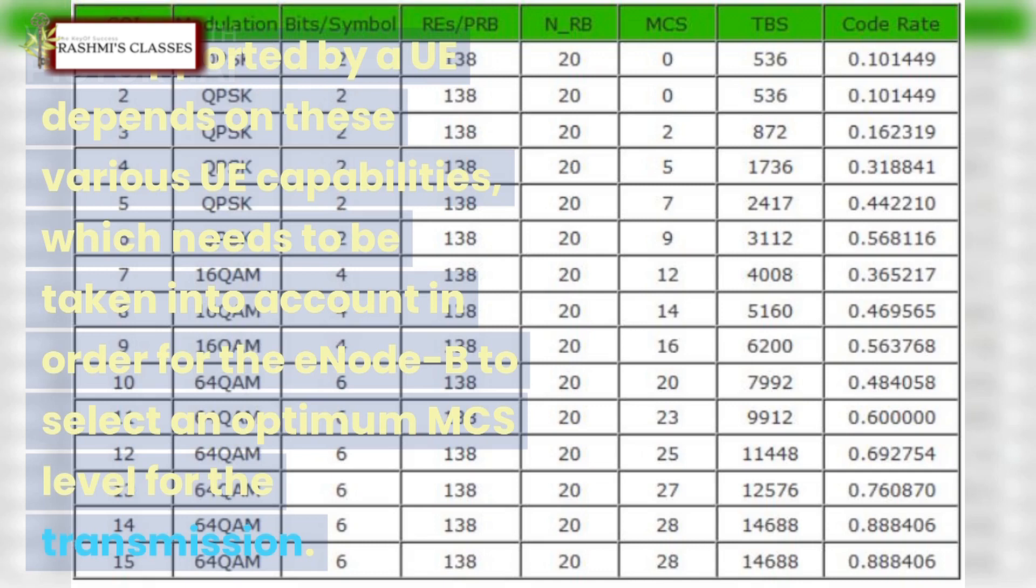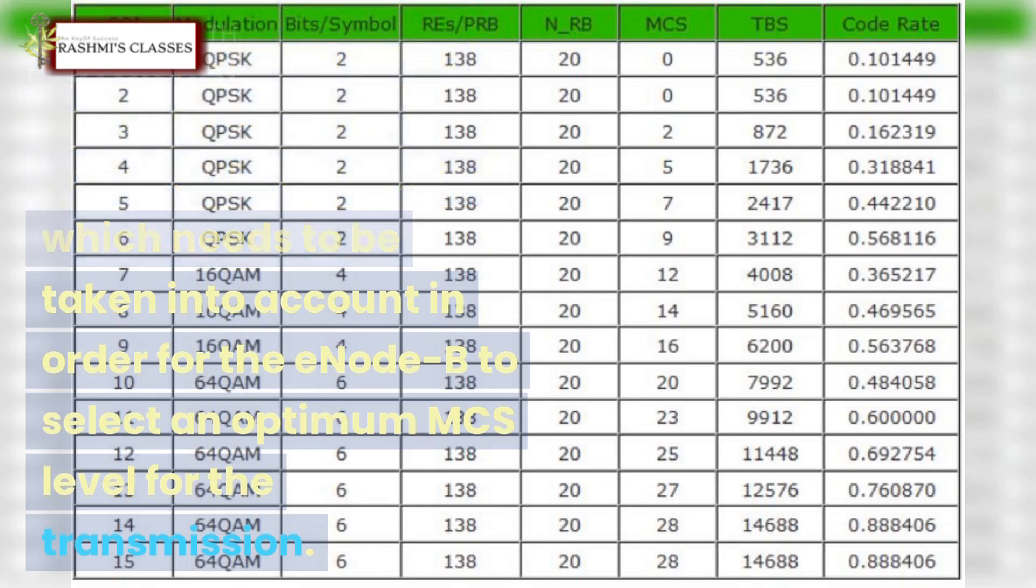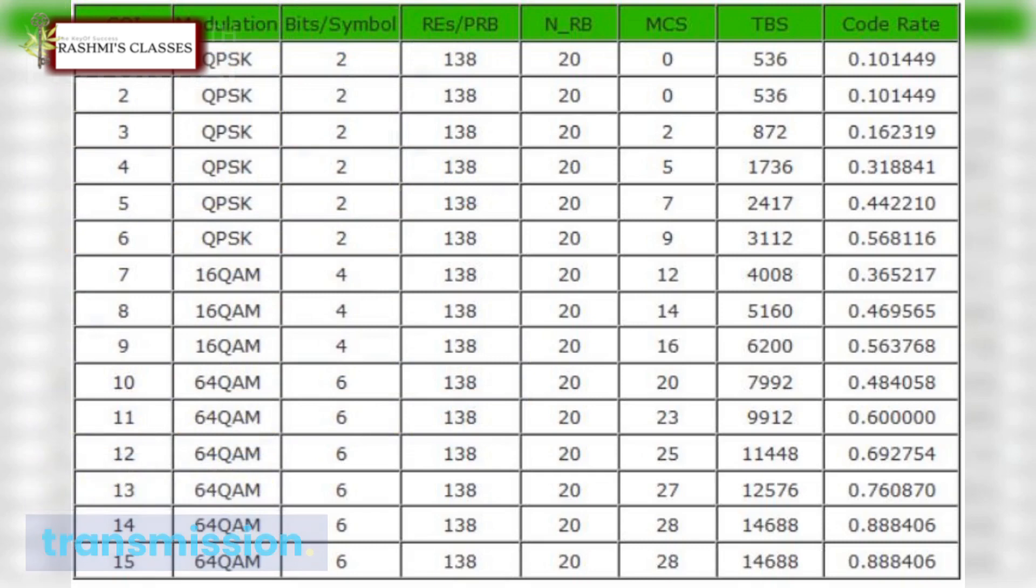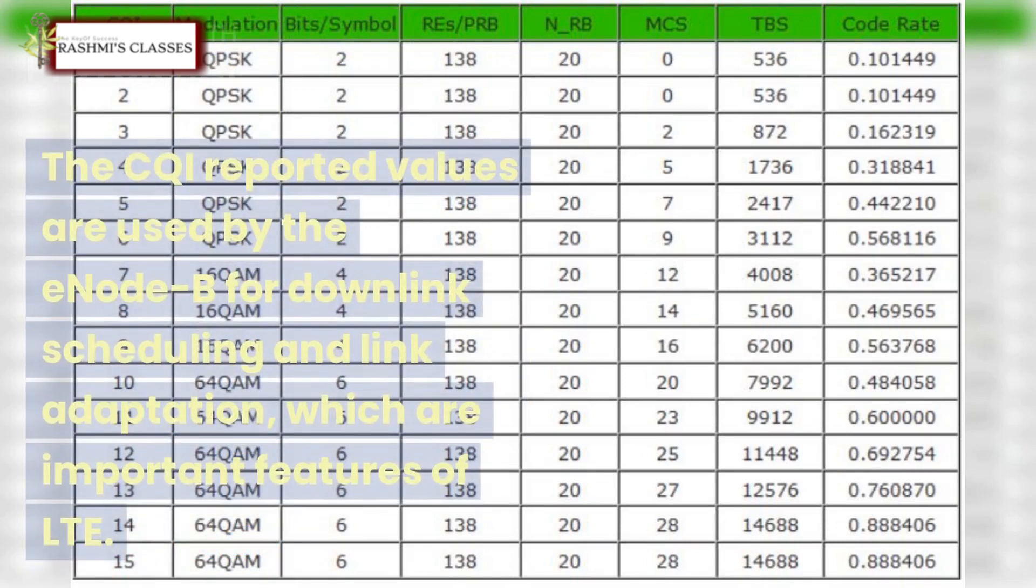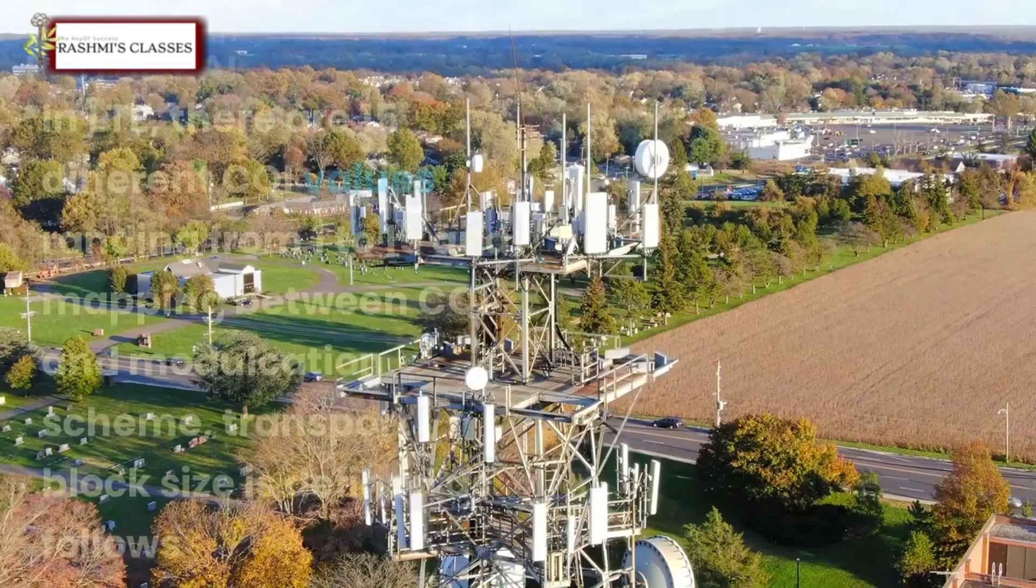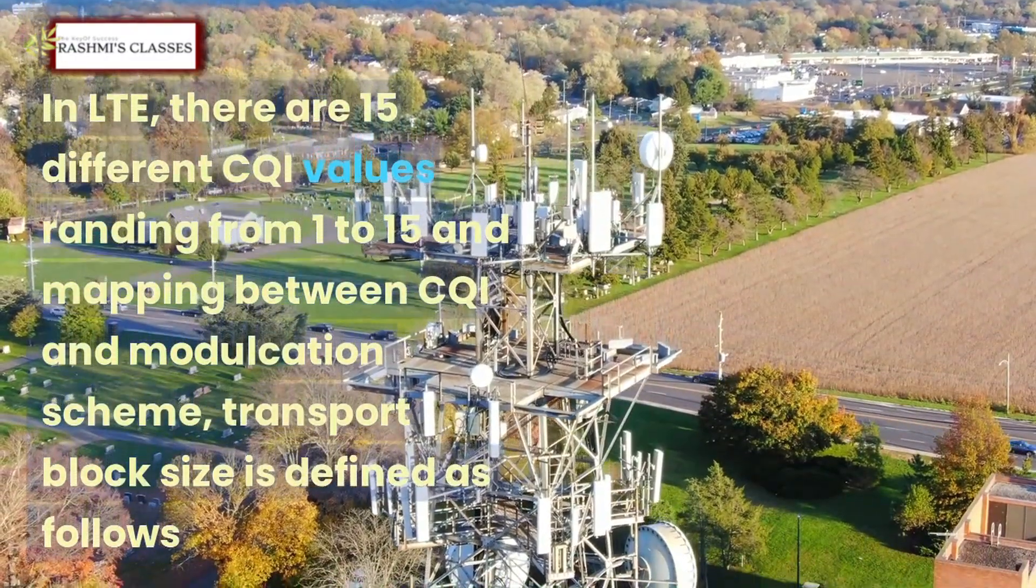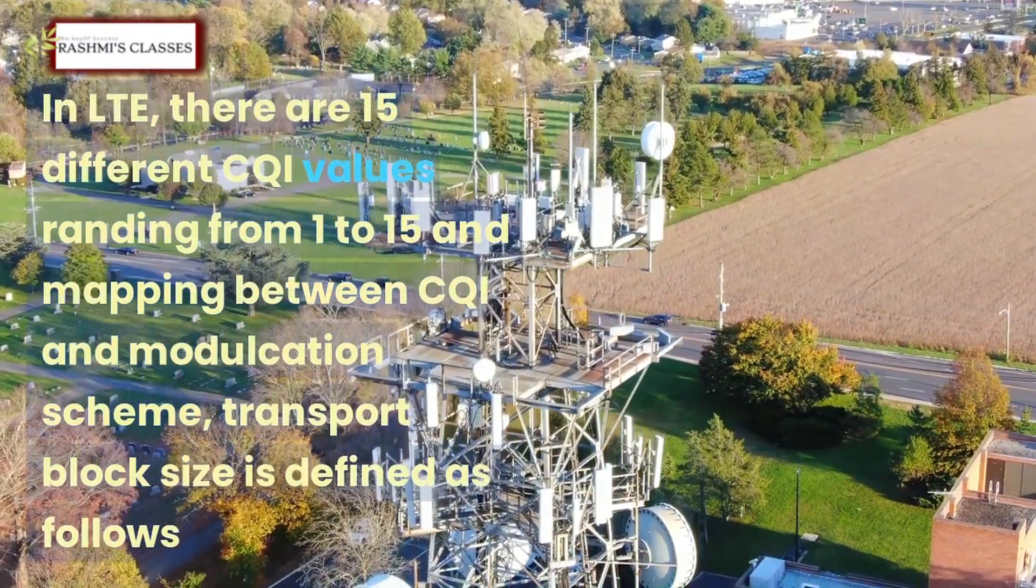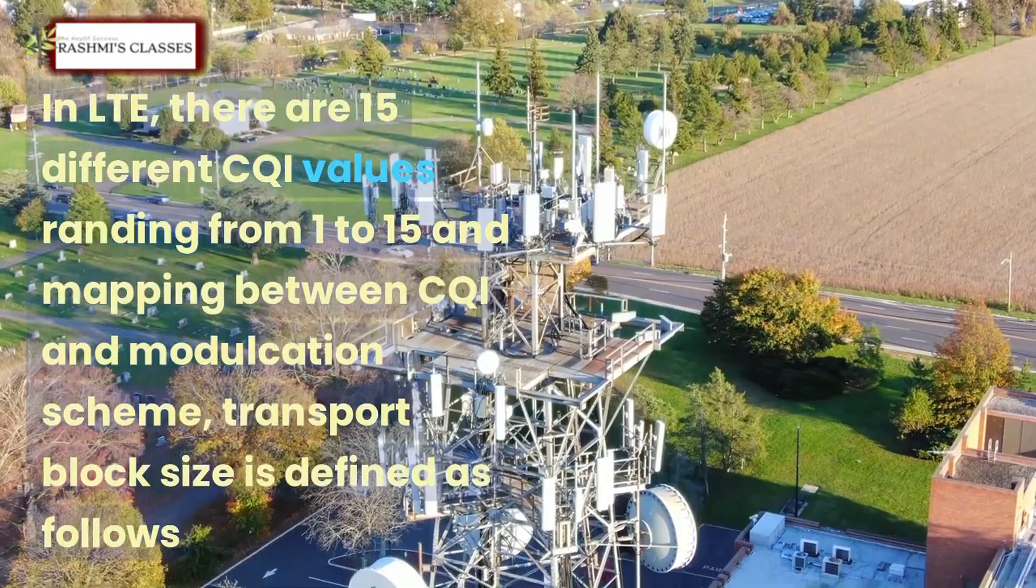In order for the eNodeB to select an optimum MCS level for the transmission, the CQI reported values are used by the eNodeB for downlink scheduling and link adaptation, which are important features of LTE. In LTE there are 15 different CQI values ranging from 1 to 15, and mapping between CQI and modulation scheme transport block size is defined as follows.